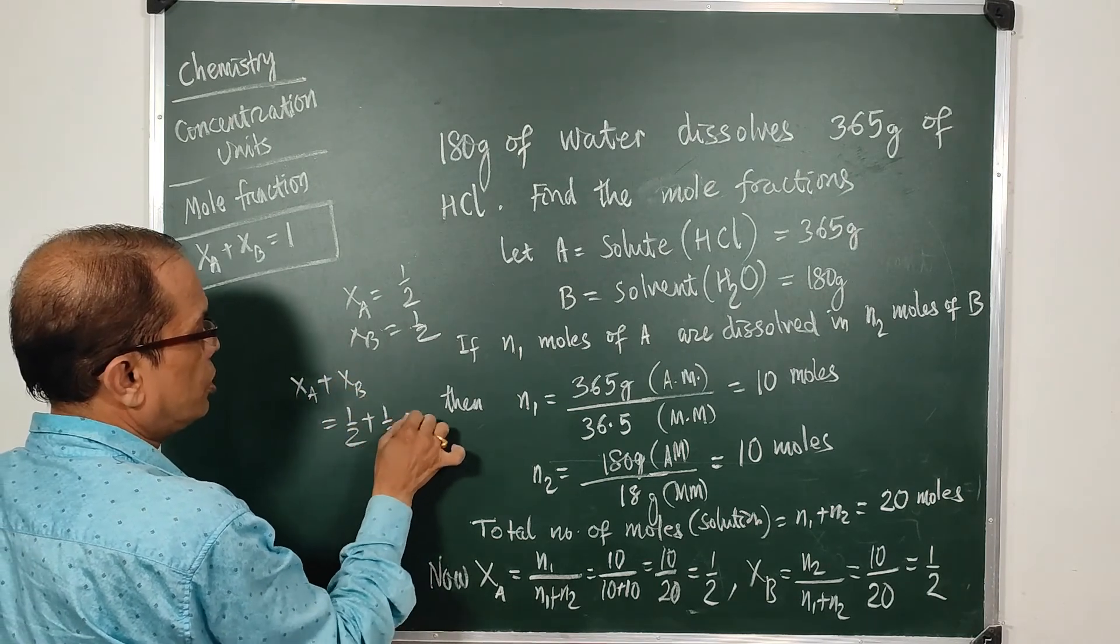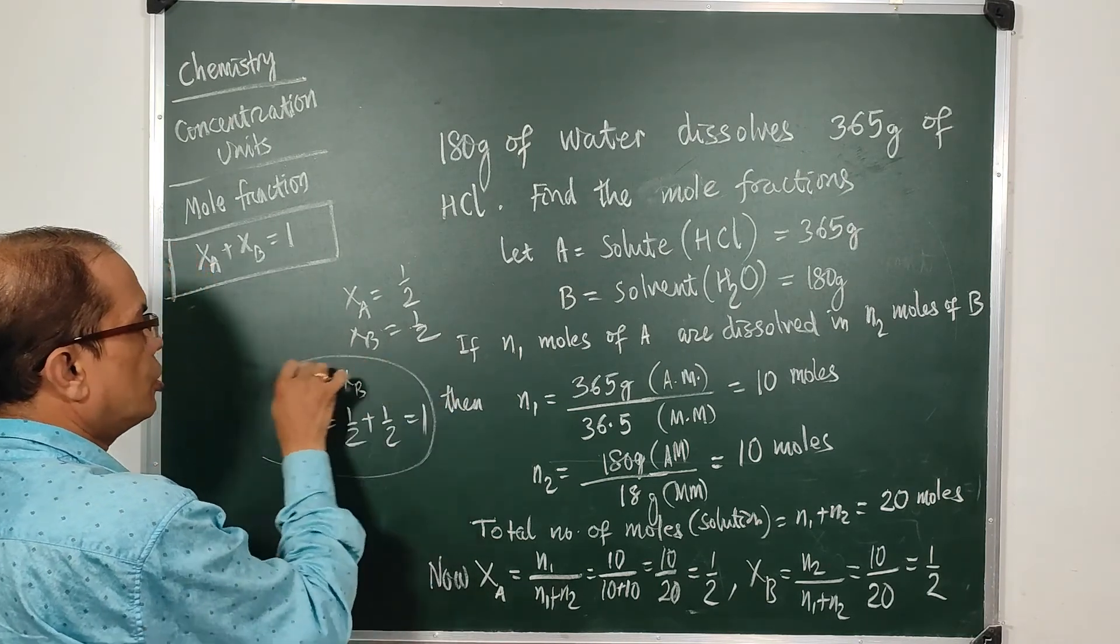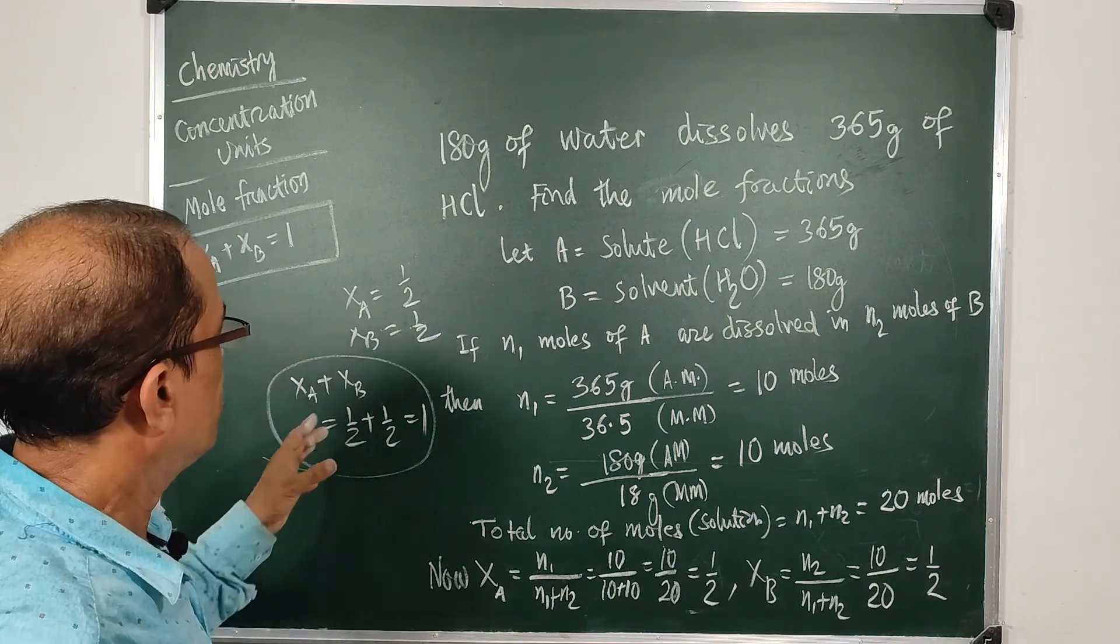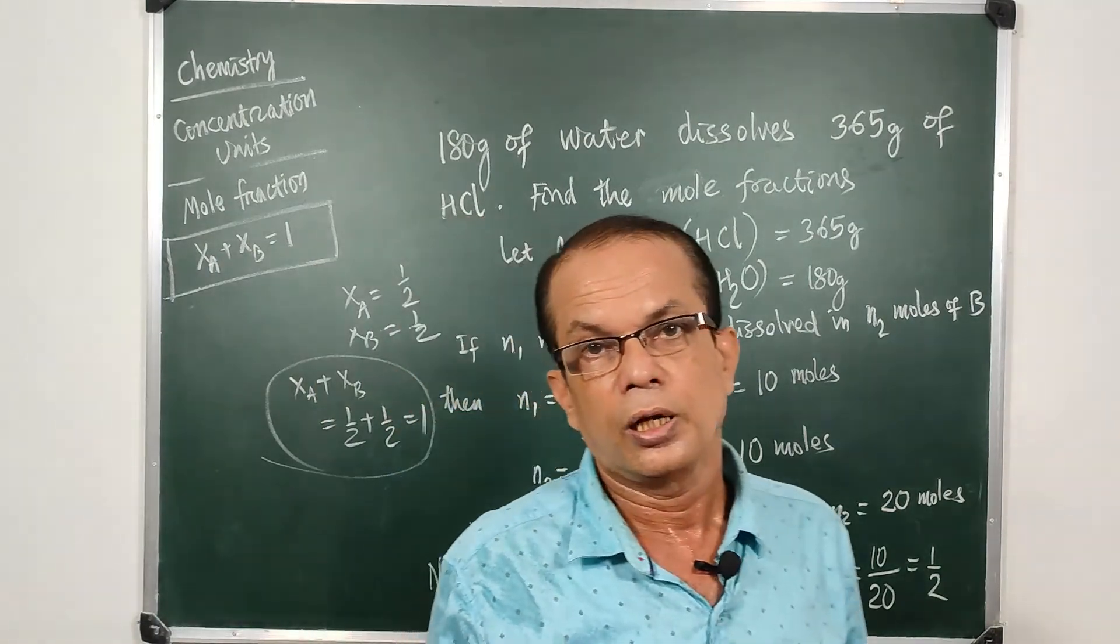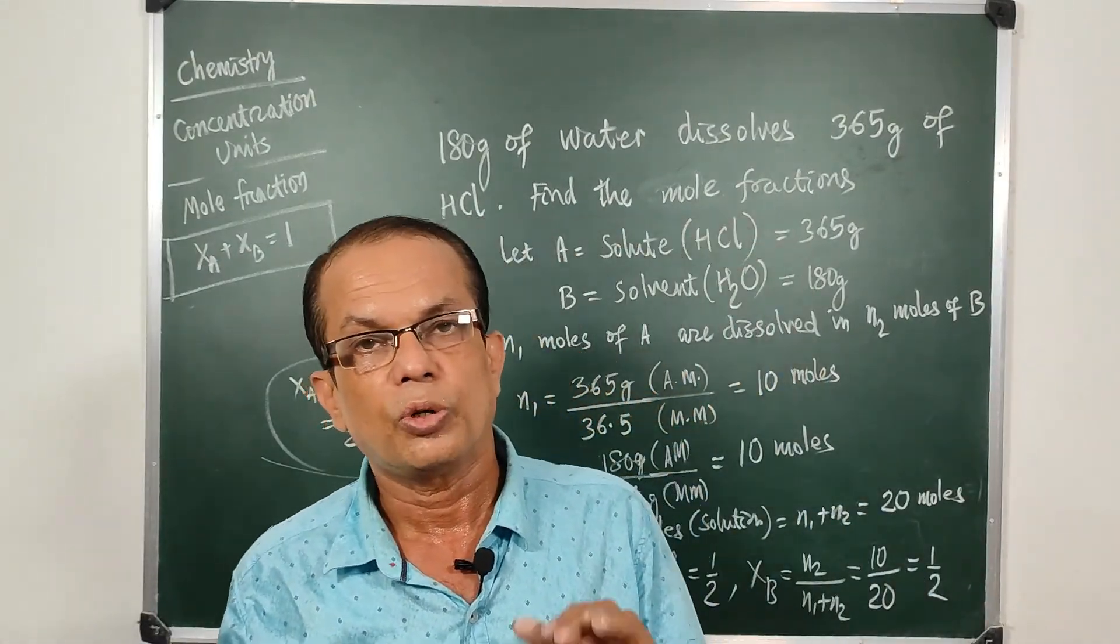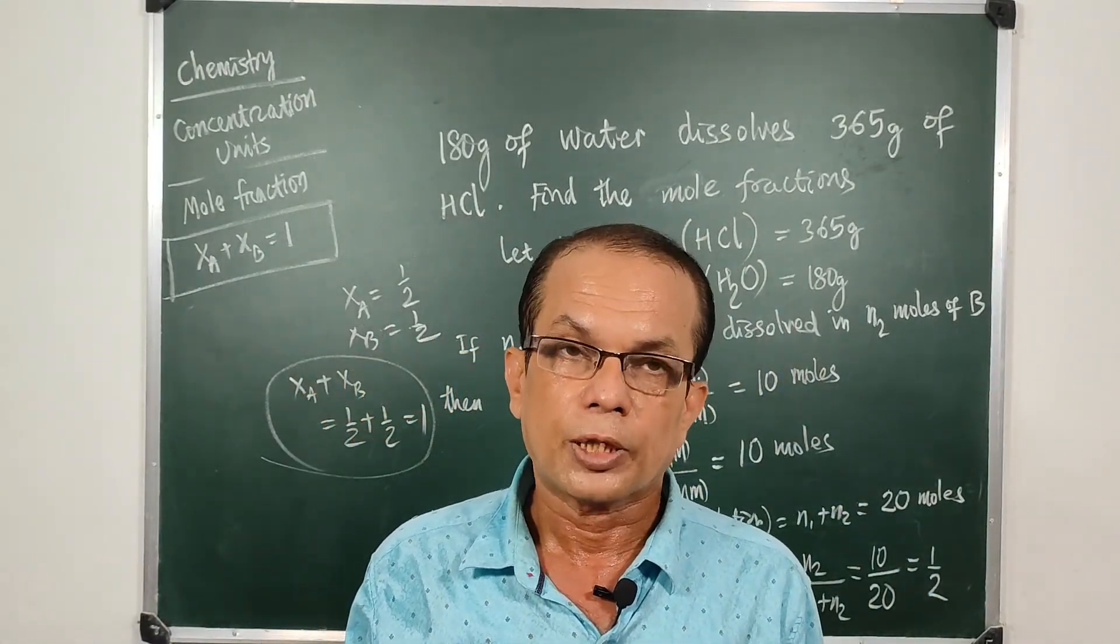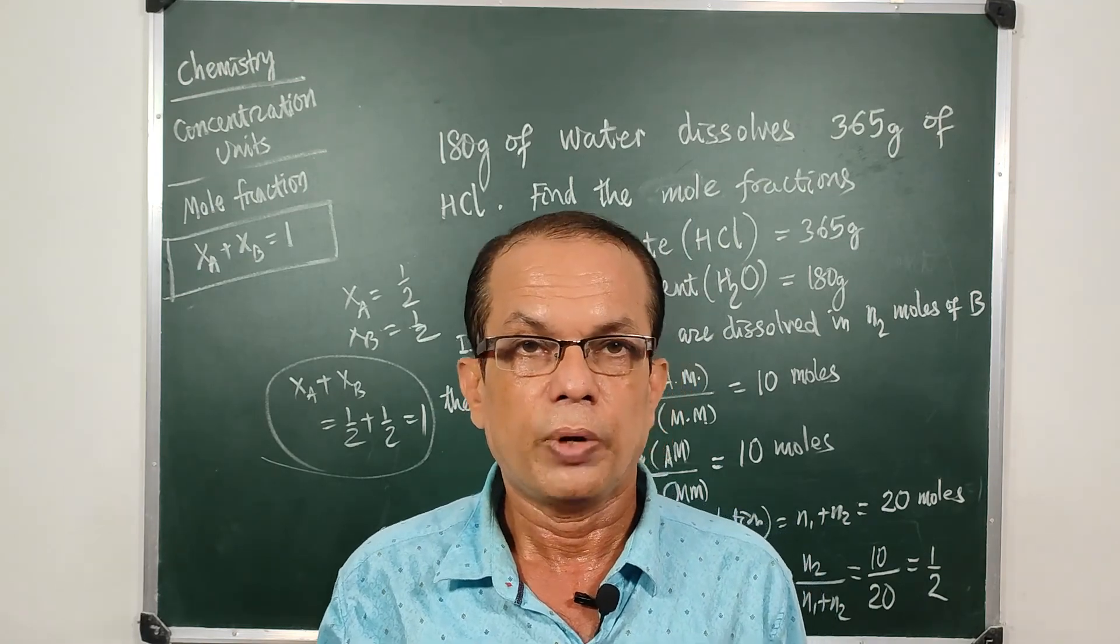So we have also proved that sum of the two mole fractions always becomes 1. And with this we conclude this class, and here mole fraction is over. In the next class we are going for parts per million or parts per billion. Thank you for watching, bye.